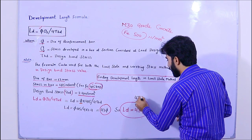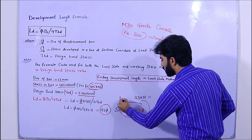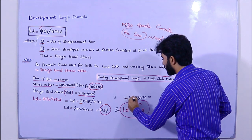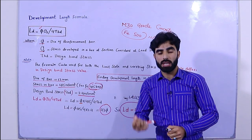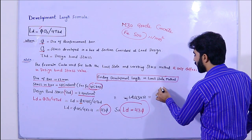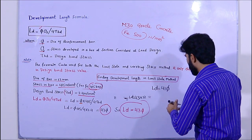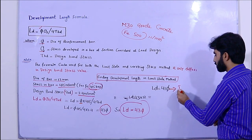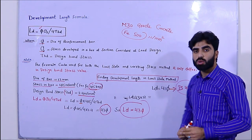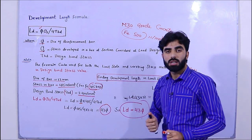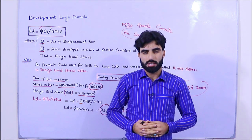So Ld = 43 × 12 mm, which gives you the total development length. Remember one important thing: the development length should not be less than 41d — that is from the reference IS 456:2000. So it must be at least 41d. This is the formula and the method to calculate development length. Hope this video helps you. Thanks for watching — see you in the next video.